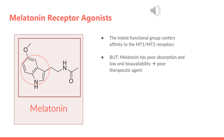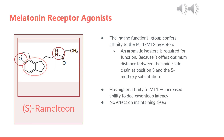It's the indole functional group, as can be seen circled in red, that confers the affinity to MT1 and MT2 receptors. But because melatonin has very poor absorption and low oral bioavailability, it's considered a poor therapeutic agent. The indane functional group, as can be seen circled in red, is what confers the affinity to the MT1 and MT2 receptors. This shows that an aromatic isostere is required for function, because it offers optimum distance between the amide sidechain at position 3 and the 5-methoxy substitution, as can be seen circled in brown.